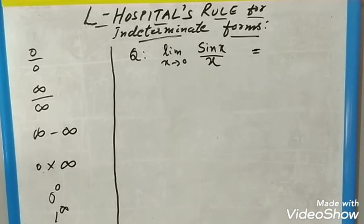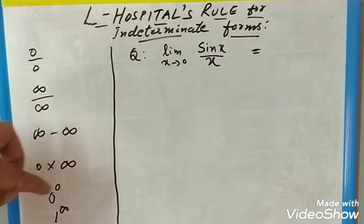For example, 0/0, when you differentiate you will get 0/0, infinity/infinity, infinity minus infinity, 0 times infinity, 0 raised to 0, 1 raised to infinity, and so on. These are the indeterminate forms which cannot be determined.